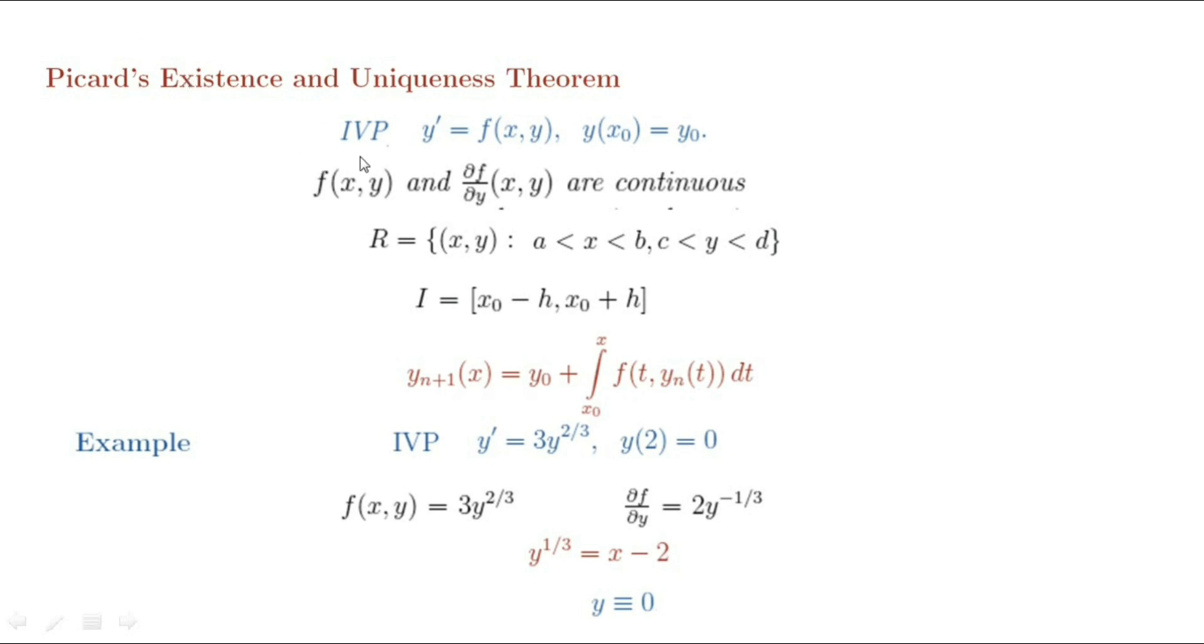Now before we discuss the idea behind successive approximations, let us first express a first-order initial value problem as an integral equation. For the initial value problem y' equals f(x,y) with y(x₀) equals y₀, suppose the function f is continuous on some appropriate rectangle and that there is a solution y(x). It is continuous on the interval I. Then we can integrate both sides of the differential equation to obtain an integral equation y(x) equals y₀ plus integral from x₀ to x of f(t, y(t)) dt.